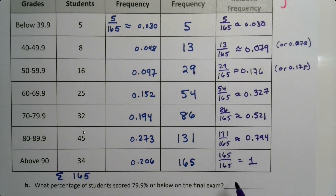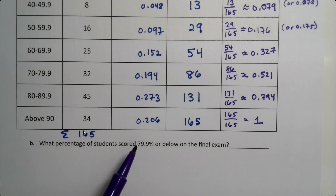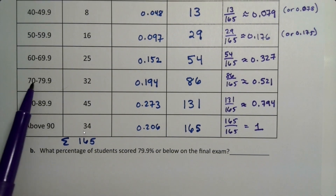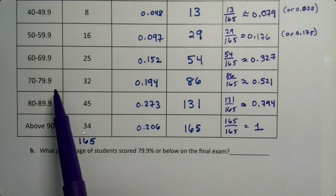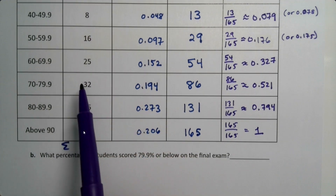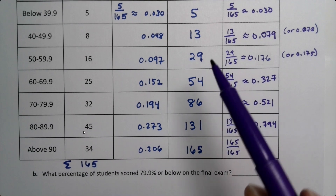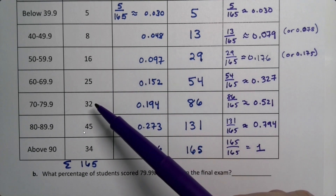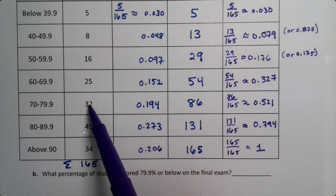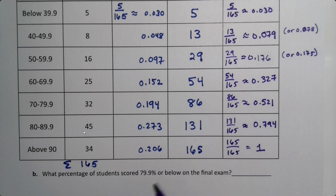Now: what percentage of students scored below 79.9 on the final exam? Well, 79.9 is right here, so the people below that are all of these — from the 5 group all the way down to the 32 group. We could add them up, but we already have it: they add up to 86, and the percentage is already right here in the cumulative relative frequency column.